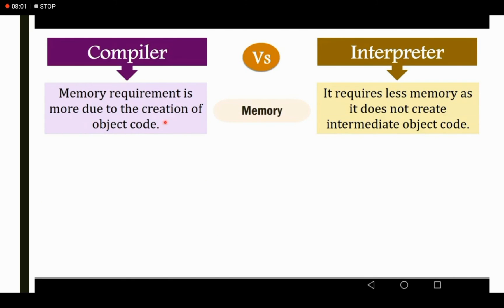Regarding memory: in the compiler, memory requirement is more due to the creation of object code — the compiler first saves the compiled program and then executes it. In the interpreter, it requires less memory as it does not create intermediate object code, so it doesn't need as much memory.